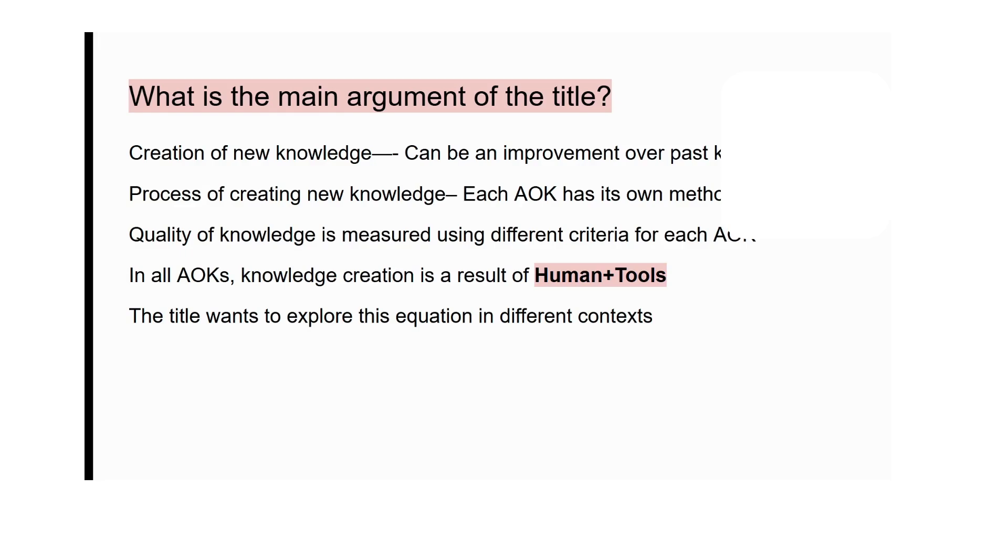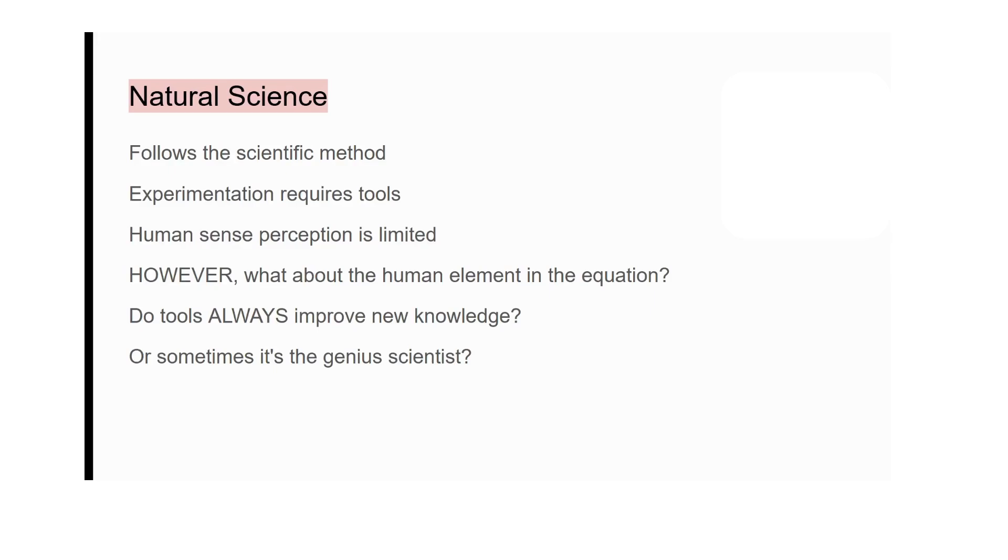Now as we mentioned natural sciences, if you're exploring this title you can discuss or go in-depth about, if you want to write a claim saying that yes tools do lead to production of new knowledge and high-quality knowledge, then you can use the claim something along the lines of how the experimentation is dependent on tools and throughout history we can see that whenever we had better tools we were able to collect and have more nuanced observations which led to discoveries.